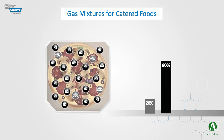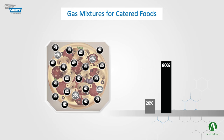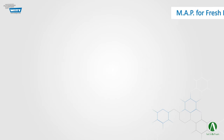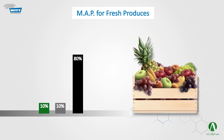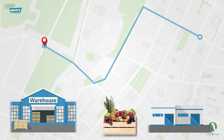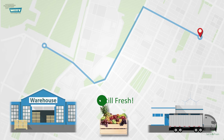There are lots of other food categories we can talk about regarding their MAP conditions and gas mixtures. Fresh produce is one of the most important types, and we will show you in another video an exciting method for keeping them fresh as they are transferred from one place to another.